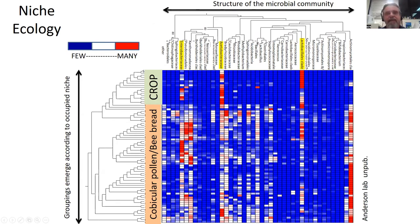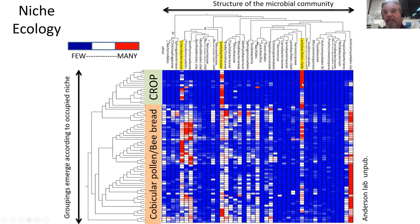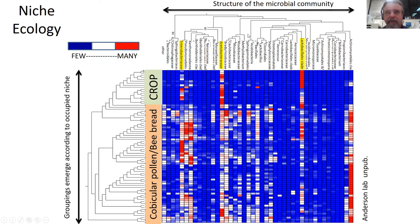Here's an example of the niche ecology. The crop is the social stomach of the bee, and these are the corbicular pollen and bee bread. Bee bread is about 50% honey by weight. You see a sieving effect — when material enters the crop, there's a harsh killing chamber, basically. You end up with Lactobacillales and Acetobacteraceae that seem to survive the crop. These are two of the social microbiome members.